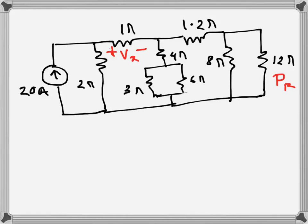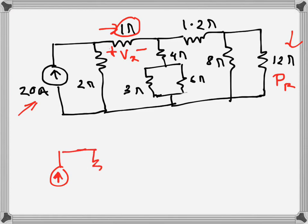For the given circuit, we need to find the voltage drop Vx across the 1Ω resistance and the power dissipated by the 12Ω resistance. There is a current source here, and in order to find Vx, we need to find the current through the 1Ω resistance. To do that, we need to find the equivalent resistance.